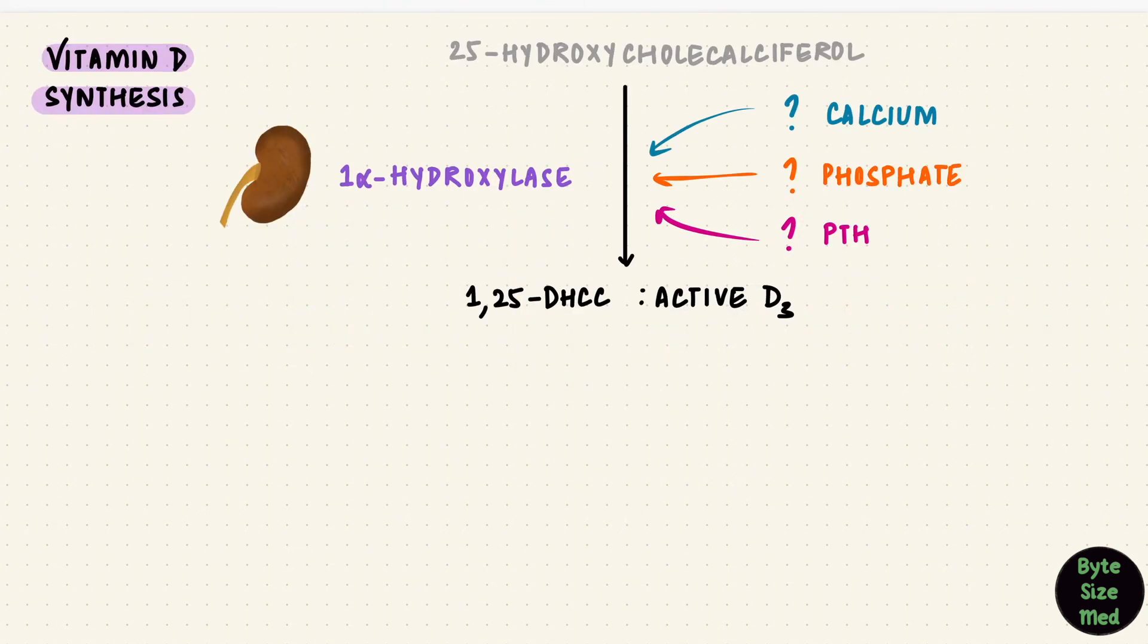The overall effects of vitamin D by acting on all three organs is to increase the ECF calcium and phosphate. So if the calcium is low, we need more active vitamin D to absorb more. Same with phosphate. Low calcium and low phosphate would thus stimulate 1-alpha-hydroxylase to produce more active vitamin D. PTH also stimulates this enzyme. Its goal is similar. It wants to increase plasma calcium. So it does that indirectly by activating vitamin D, which can then absorb calcium from the intestines. So there's calcium, phosphate, PTH, and vitamin D itself, which can regulate this enzyme.